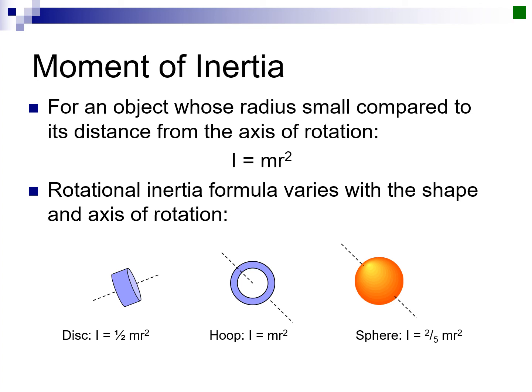The equation for moment of inertia for an object whose radius is small compared to its distance can be found using I for moment of inertia equal to mr², where r is the distance between the axis of rotation and the mass. Rotational inertia formula varies with the shape and the axis of rotation's position.